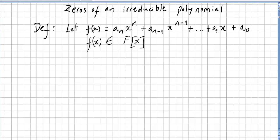This video is still in the chapter of extension fields, and we finish this section with the concept of zeros of an irreducible polynomial. We are introducing here a definition. Let f(x) = a_n x^n + a_{n-1} x^{n-1} + ... + a_1 x + a_0, where f(x) is in the ring of polynomials.